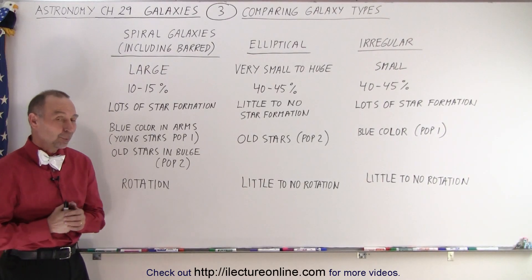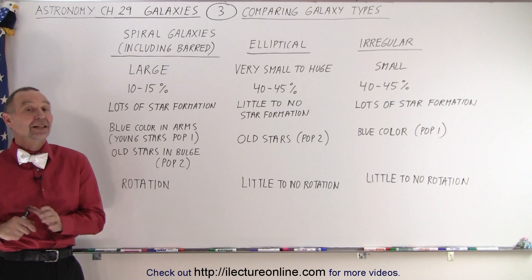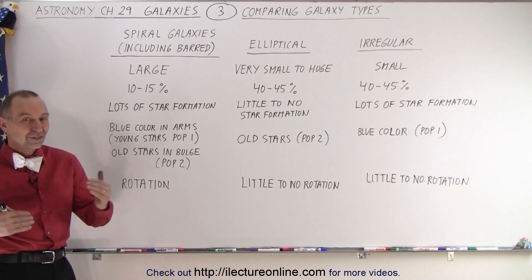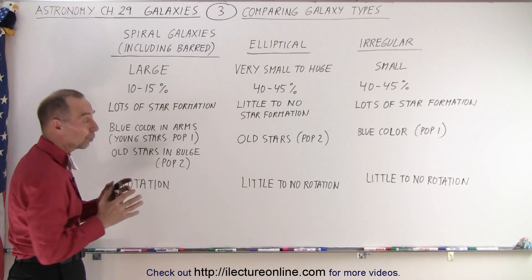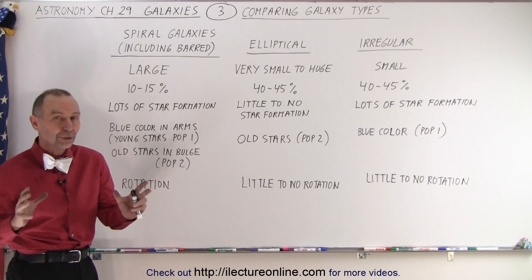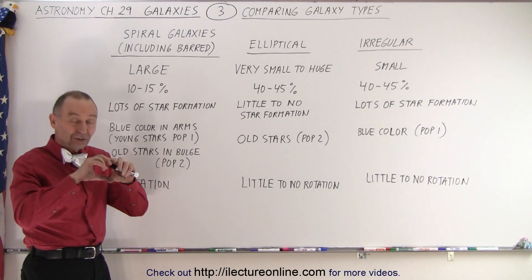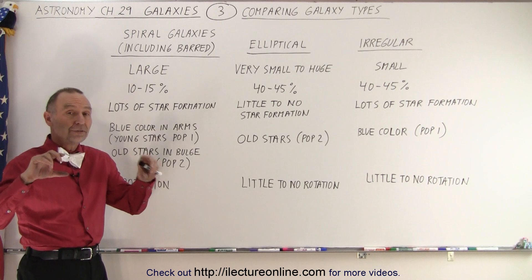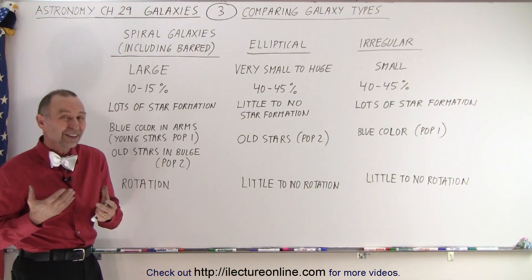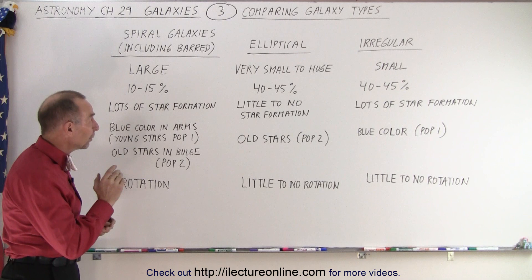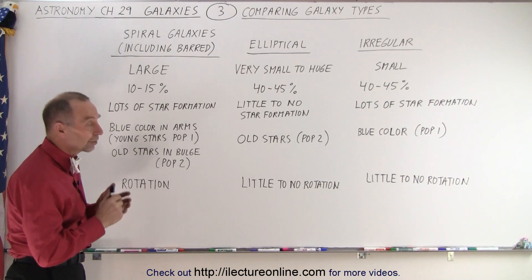Welcome to our lecture online. What we're going to do now is compare the different kinds of galaxies and see how they stack up against one another. We have the spiral galaxies — including the barred spiral galaxies, because besides the central bar they look fairly similar to one another. Then we have the elliptical galaxies, and then we have the irregular galaxies.